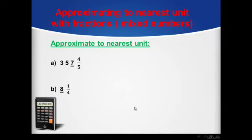Let's move to another case: approximating to nearest unit with fractions — case of mixed numbers. Here we will follow specific steps. First, keep numbers before the units digit the same as it is. Second, look at our fraction and ask yourself: does this fraction give 1 to the units digit? To determine this, multiply the numerator by 2, then compare the result with the denominator. If greater, give 1 to the units digit; if not, keep the units digit the same. In both cases, cancel out the fraction.